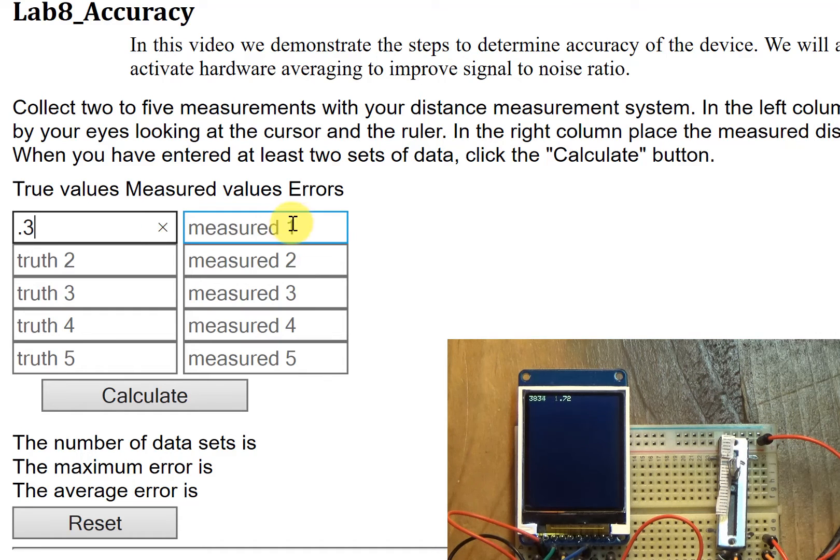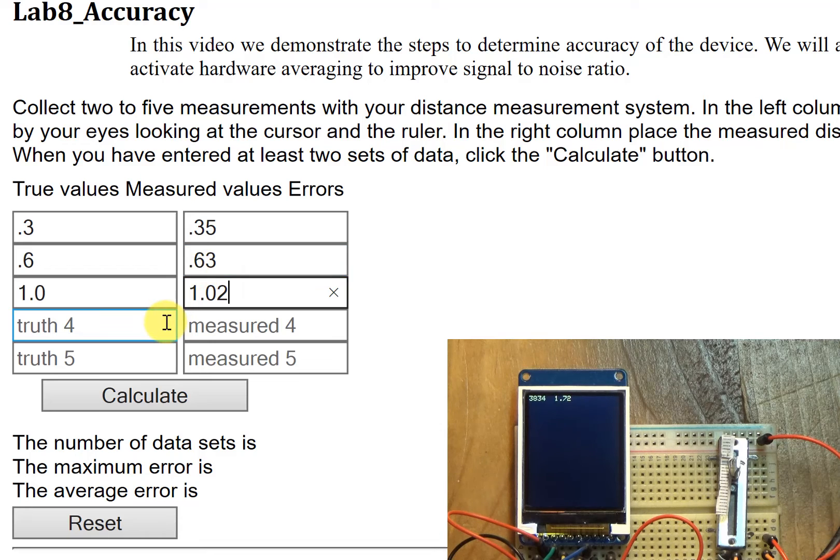0.3 was the true value, 0.35 was the measured value. 0.6, 0.63. I could push calculate after I get two but I got a bunch so I'm putting them all in. On the left is the true value and on the right is the measured value. 1.5 and 1.51, 1.7 and 1.72.